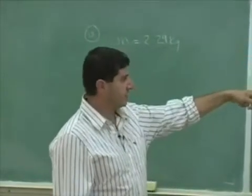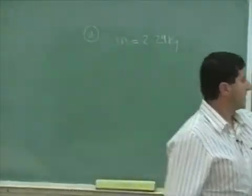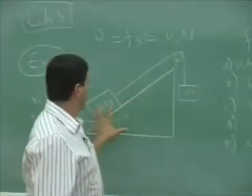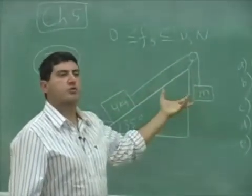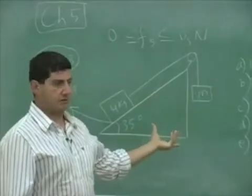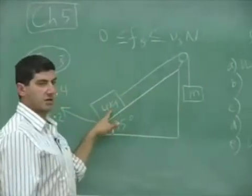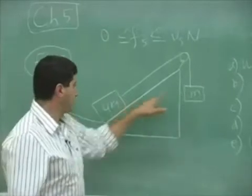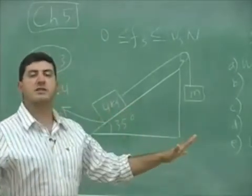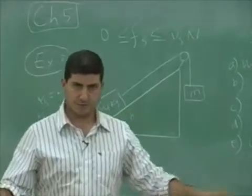That's the same answer as this one. In other words, if you have 2.29 kilograms here, the system will be in equilibrium and there won't be any friction even. There won't even be friction on this guy. There's no need for friction. That is balancing this out perfectly, completely.